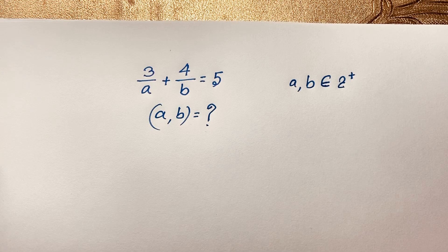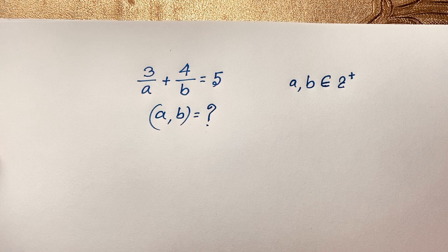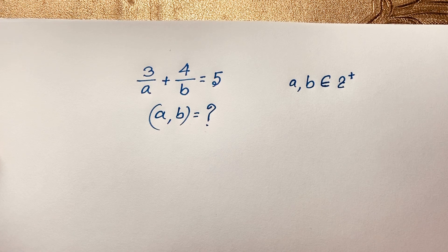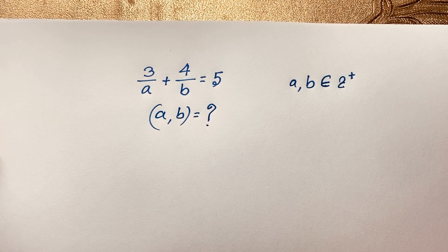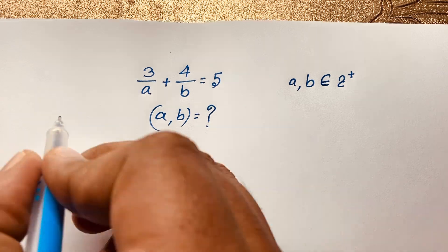Hello everyone. In this video, we have solved a nice math olympiad question. The question is 3 over A plus 4 over B is equal to 5. We have to find out what is the value of A and B, where A and B are positive integers. So let's start the solution.